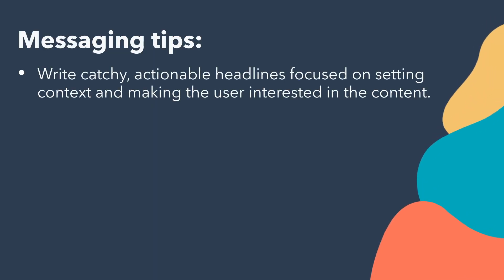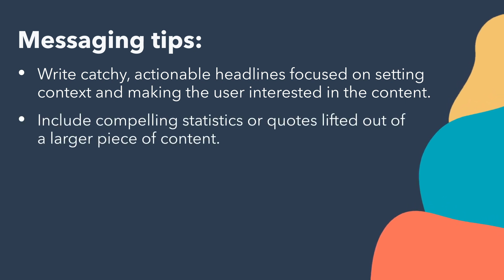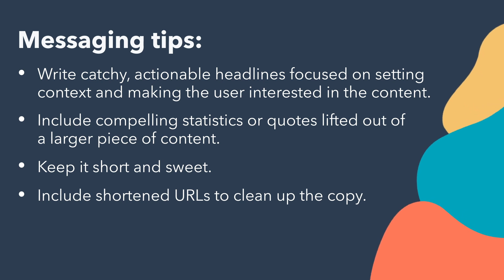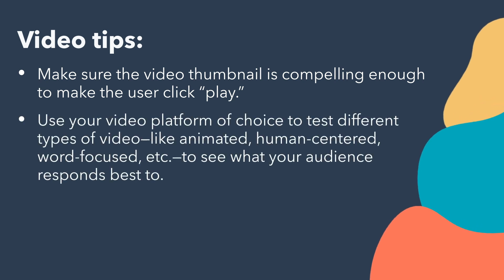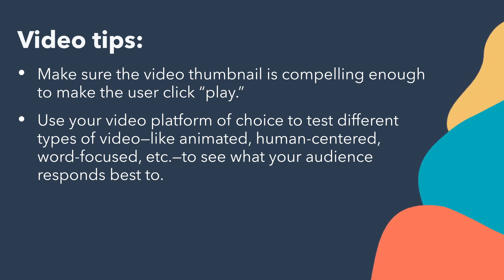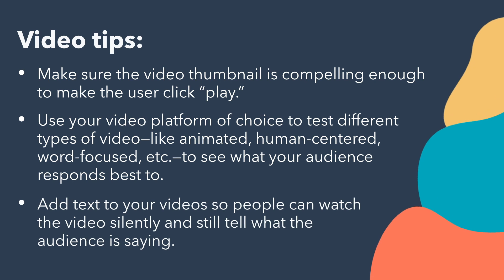For messaging, write catchy, actionable headlines focused on setting context and making the user interested in the content. Include compelling statistics or quotes lifted from a larger piece of content, keep it short and sweet, include shortened URLs to clean up the copy, and include a call to action. For video, make sure the thumbnail is compelling enough to make the user click play, test different types of video like animated, human-centered, or word-focused to see what your audience responds to best, and add text so people can watch silently. Don't just select one asset or messaging technique — run A/B tests to tailor your strategy to what works over time.